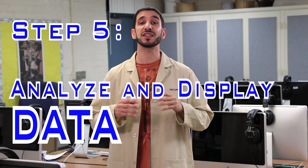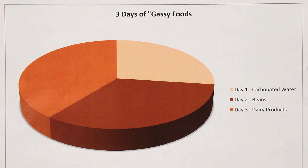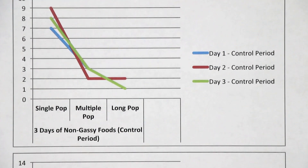Step five: analyze and display data. This is where you look closely at your data and interpret its meaning — what does it mean towards your original question? Then you want to find the best way to visually represent your data: bar graph, pie chart, line graph — all three are options.